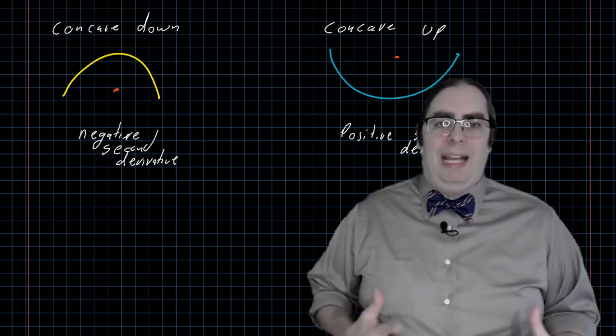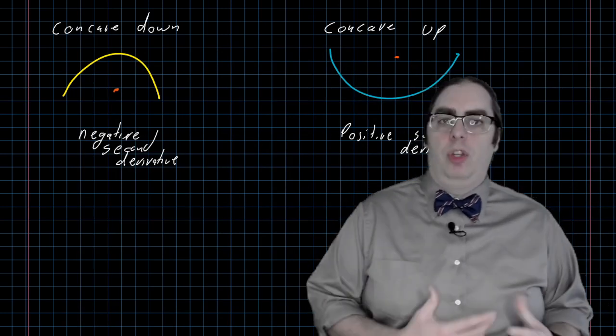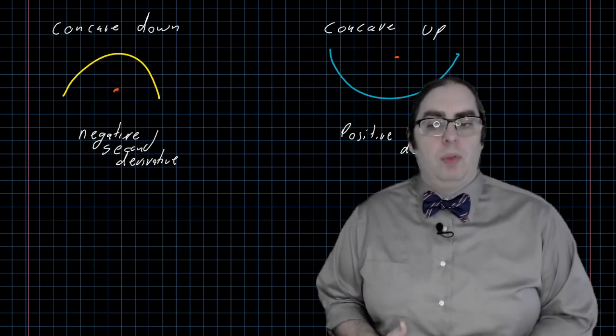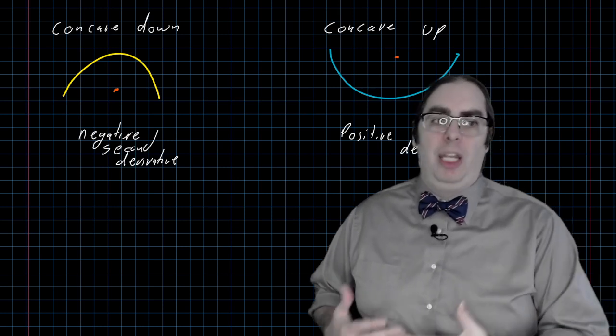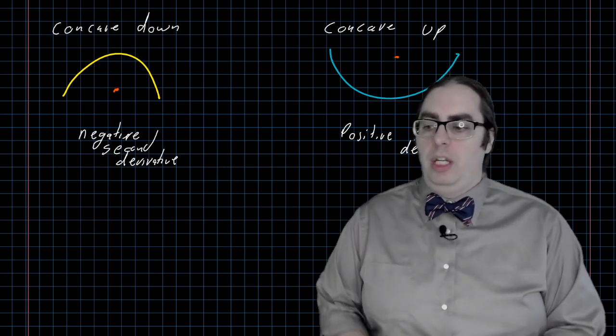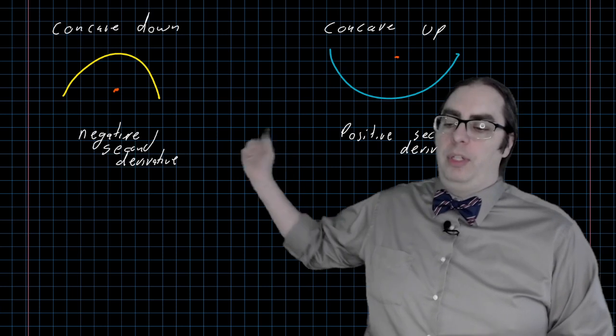So now we have a meaning to the second derivative. The second derivative tells us how a curve appears. Does it curl upward? Does it curl downward?